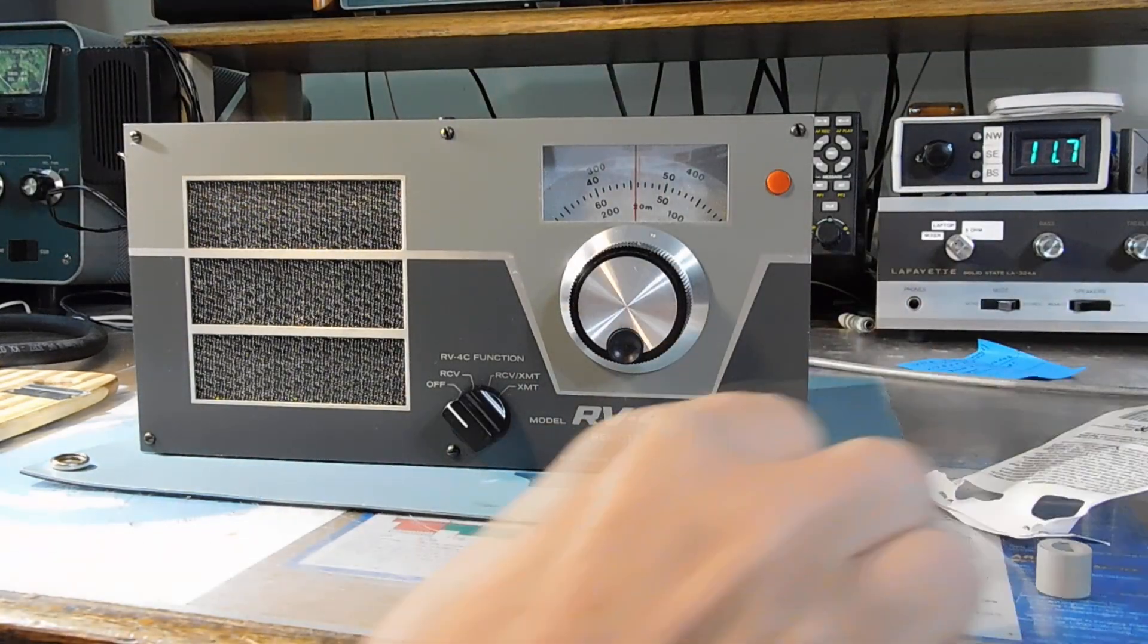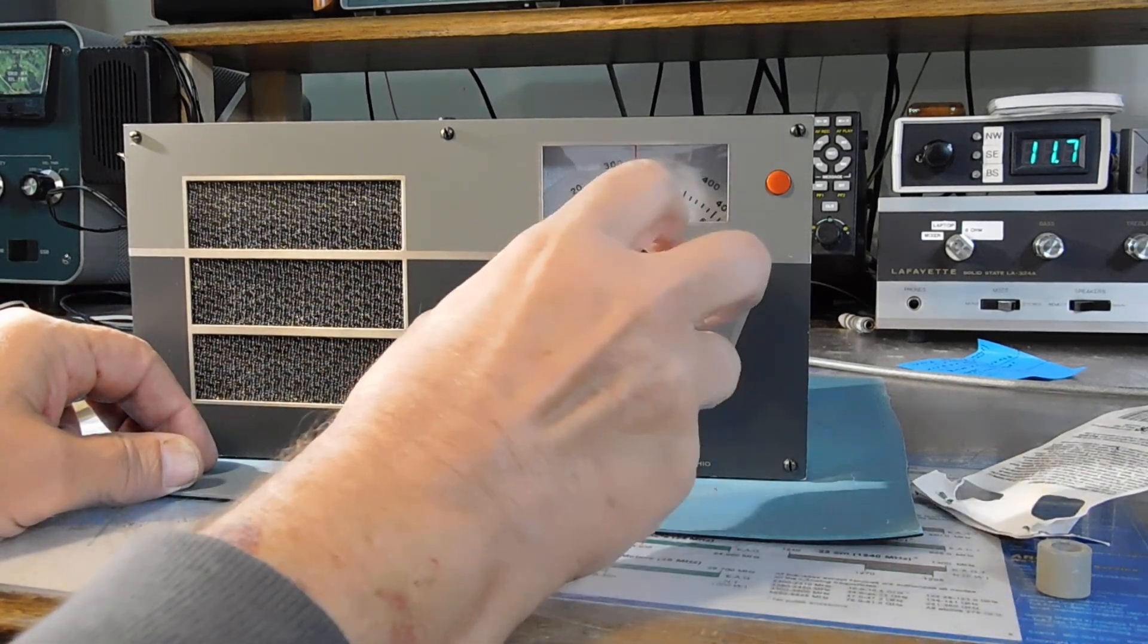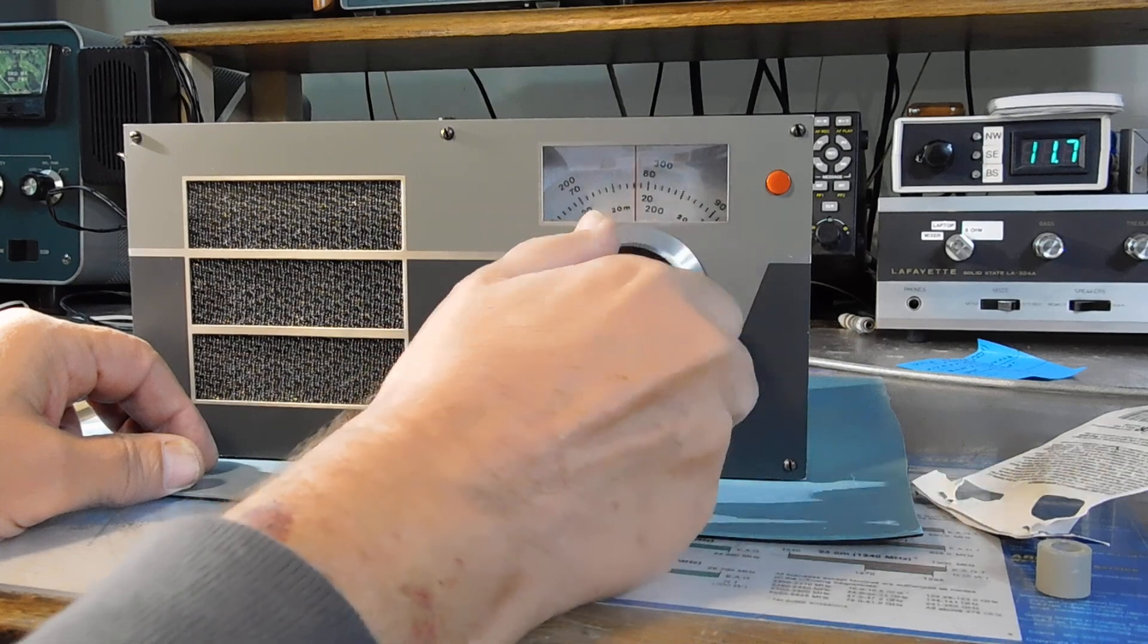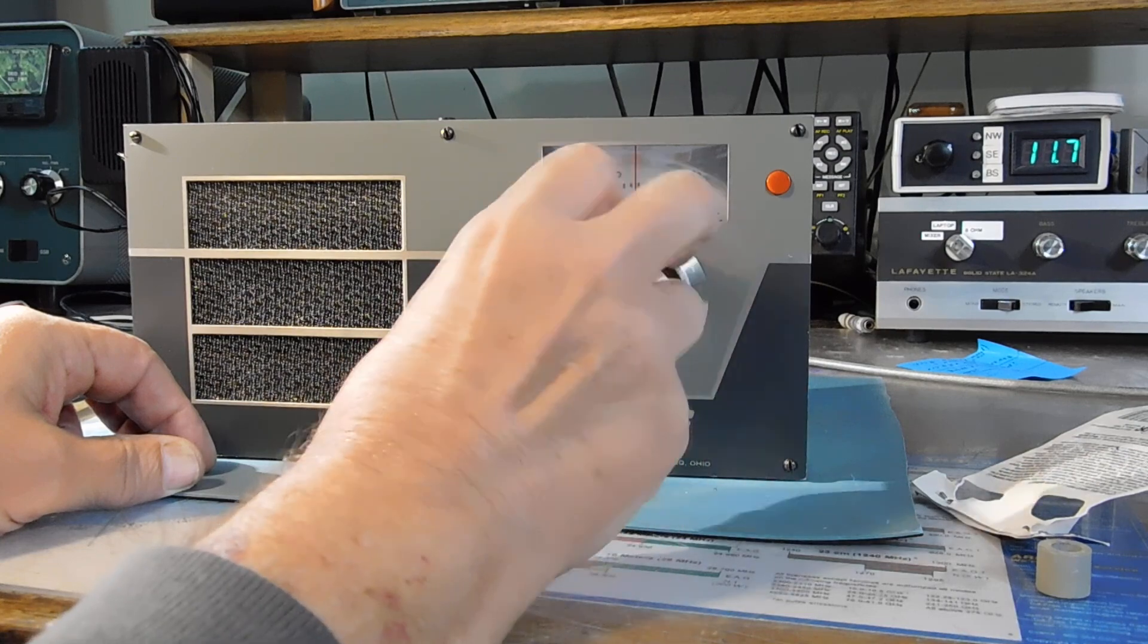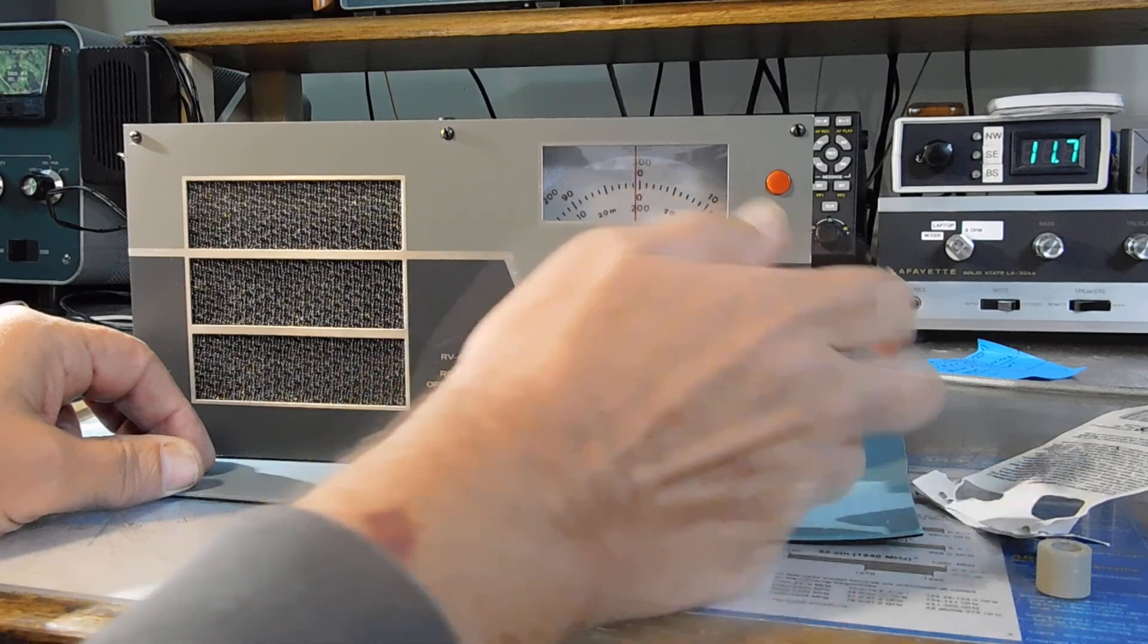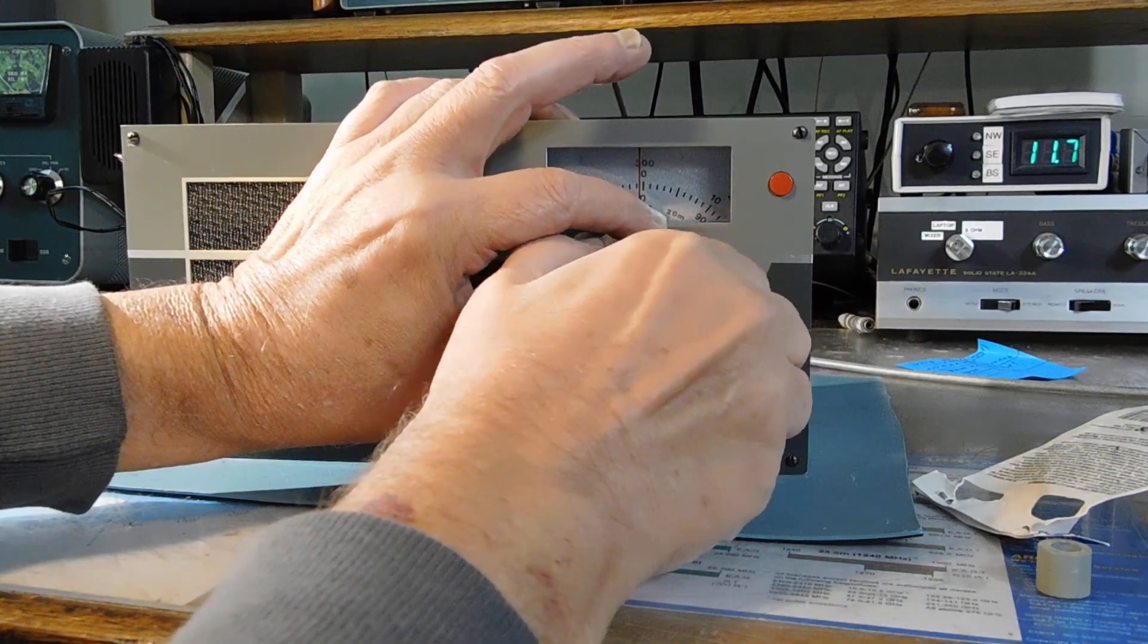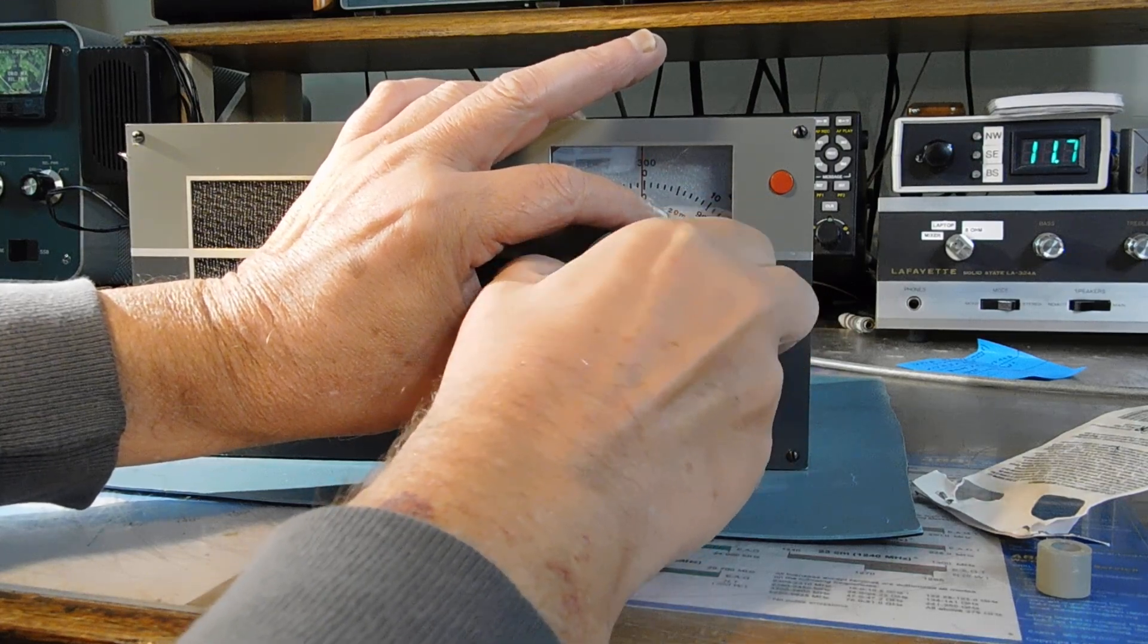Tighten it up. Now we should be good to go—no dial slip in either direction. And now when you want to calibrate, you can actually hold the skirt and tune the PTO to get a zero beat.